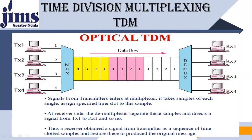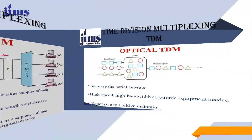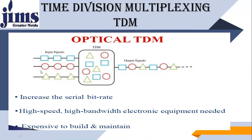Signals from transmitters enter the multiplexer, which takes a sample of each signal and assigns a specific time slot to that sample. At the receiver side, the demultiplexer separates these samples and directs the signal from TX1 to RX1 and so on. The receiver obtains the signal from the transmitter as a sequence of time-slotted samples. In this optical TDM example with three sources, all are multiplexed and share the same channel, with frames repeating cyclically so information from all three sources flows across the optical fiber simultaneously.